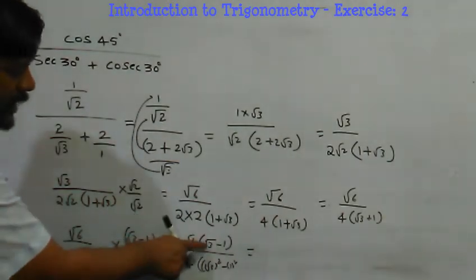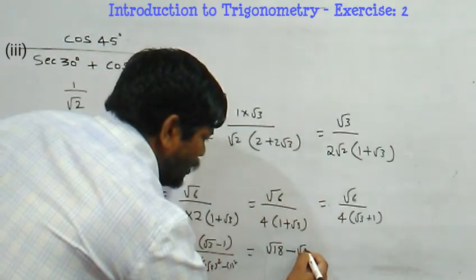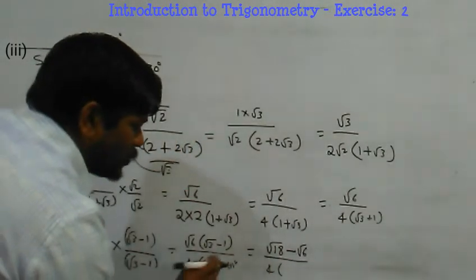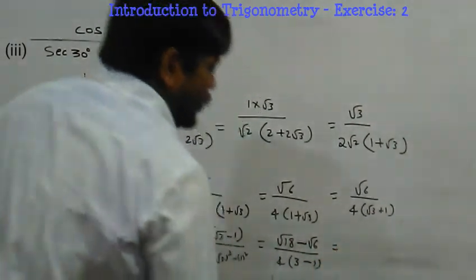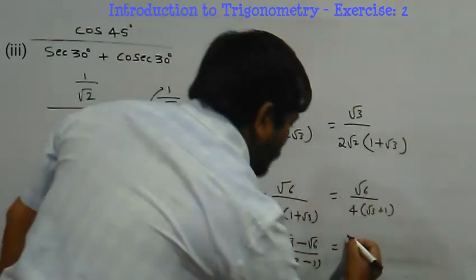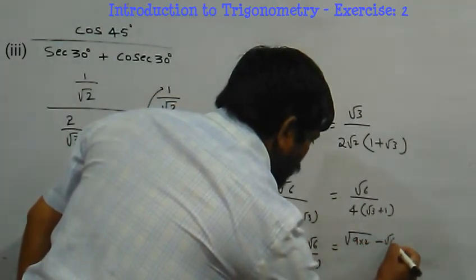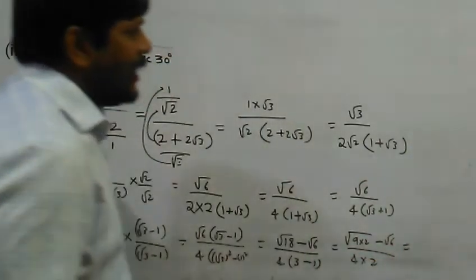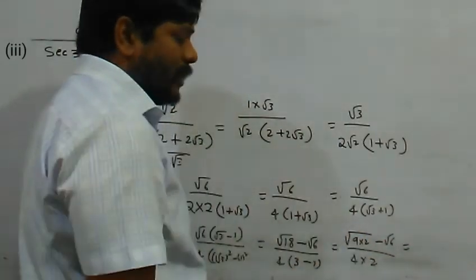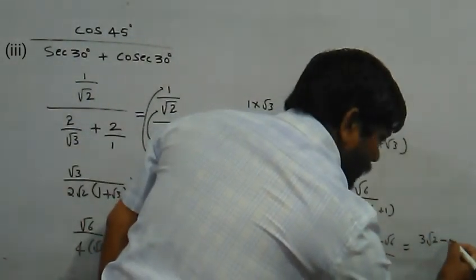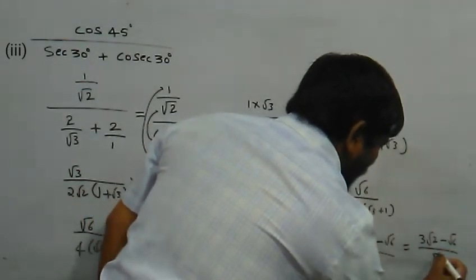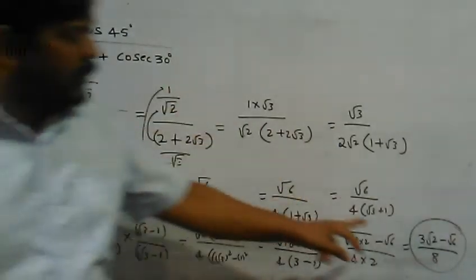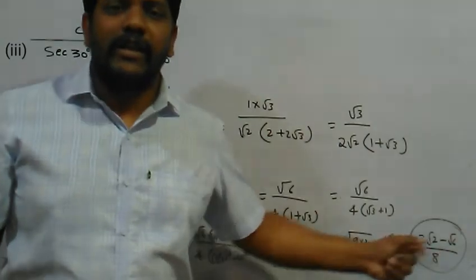It is nothing but root 6 into root 3 is root 18 minus root 6 into 1 is root 6, divided by 4 into root 3 squared is 3, minus 1 squared is 1. Root 18 can be written as root 9 into 2, and 4 into 3 minus 1 is 2, making 8. When root 9 comes out it is 3, so the final answer is 3 root 2 minus root 6 divided by 8. The value of cos 45 degree divided by secant 30 degree plus cosecant 30 degree is equal to 3 root 2 minus root 6 divided by 8.